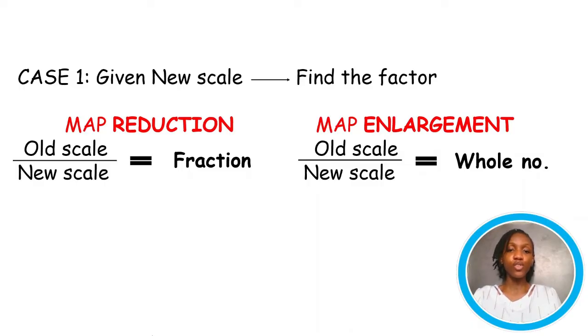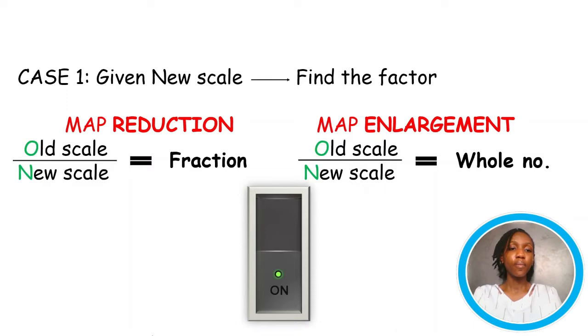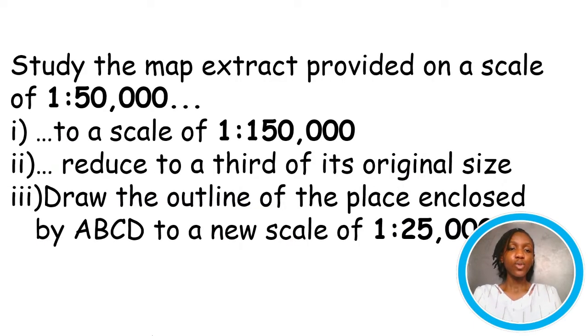Always remember this. For reduction, you get a fraction. For enlargement, you get a whole number. So, when dividing the old scale by the new scale, the answer you get is what determines whether it's going to be reduction or enlargement if the question doesn't tell you directly. So, as not to make a mistake with the numerator or denominator, remember the word ON. Old over new, O, N.